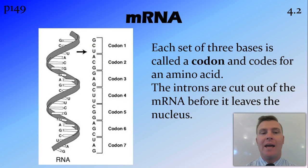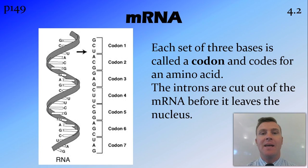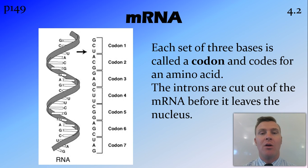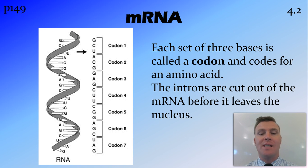So the mRNA is made of a long chain of bases. Each set of three bases together is called a codon and codes for a particular amino acid. However, there are more codons than there are amino acids, so multiple codons or multiple sequences of bases could code for the same amino acid.